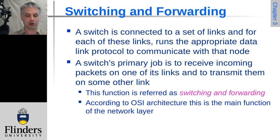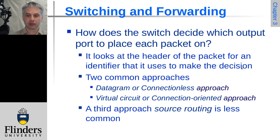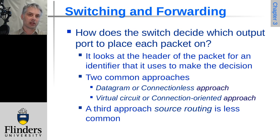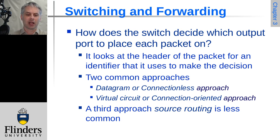According to the OSI model, this is the main job for the network layer. The question is how does the switch decide which port it needs to output each frame onto, since we're working at layer two. It will almost always look at the header of the packet — it would be quite unusual to look at something else unless you're doing deep packet inspection for firewalls, but that's a separate topic. It looks for some kind of identifier in there to make a decision based on that.